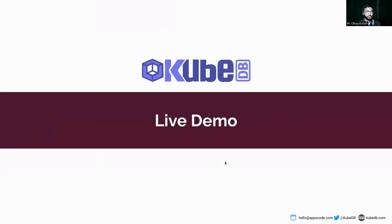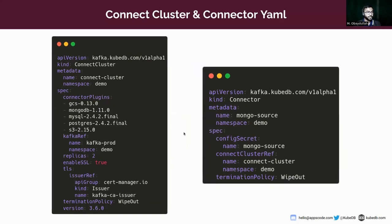Here is our live demo. Before going into the live demo, we need to discuss two of our custom resources: the connect cluster and the connector. Like other resources, both have an API version and kind. The API version is the same for both: kafka.kubedb.com. The kind for the Kafka cluster is ConnectCluster and for the connector it is Connector.